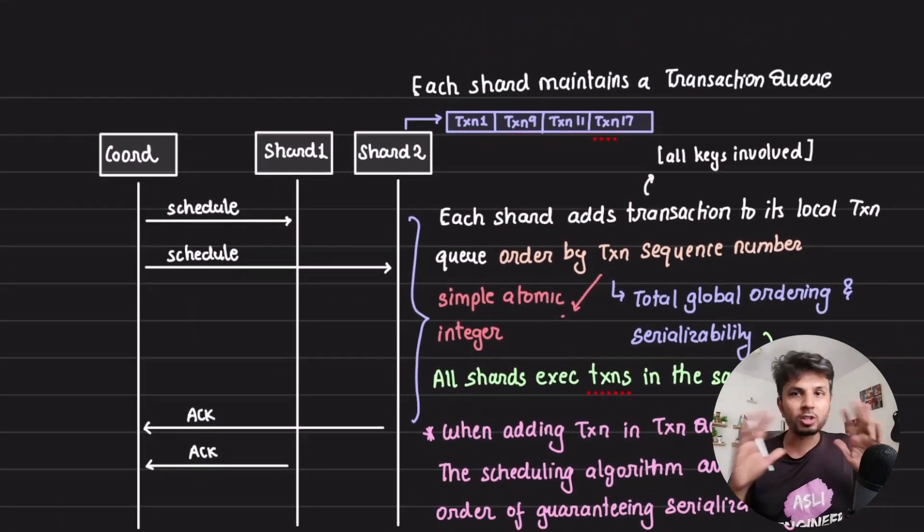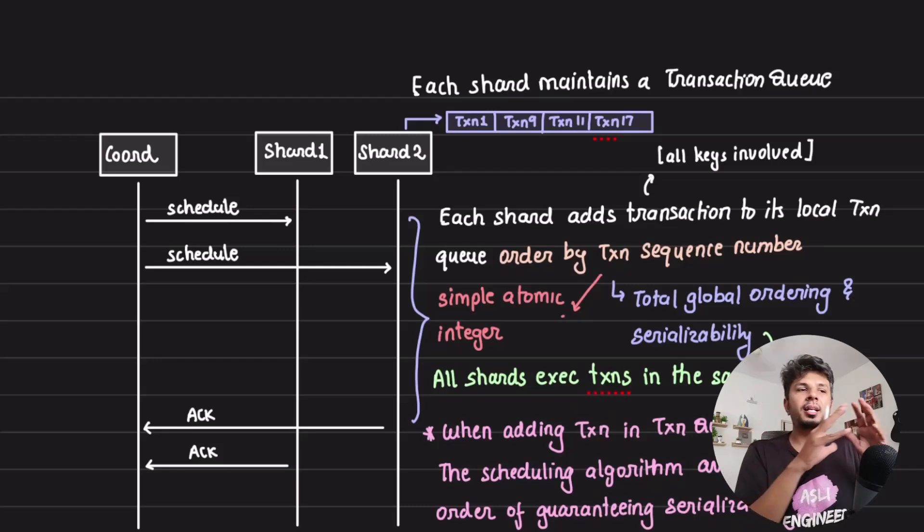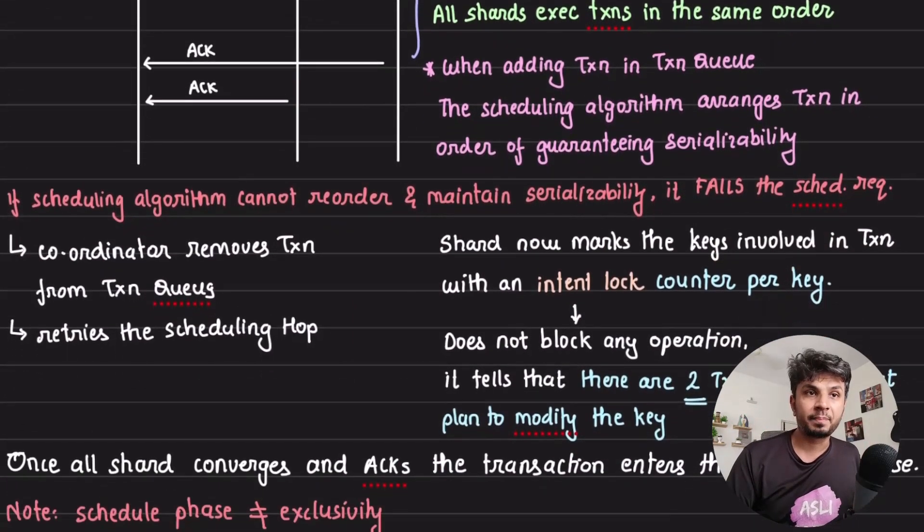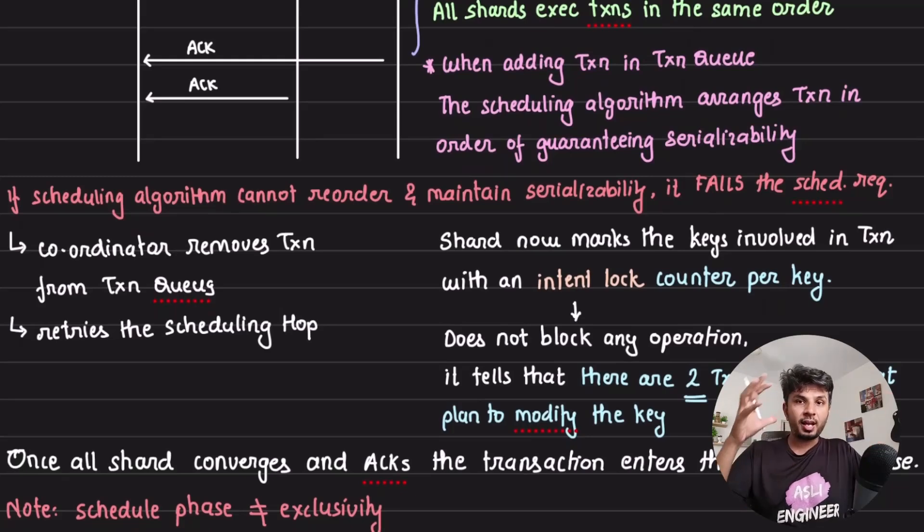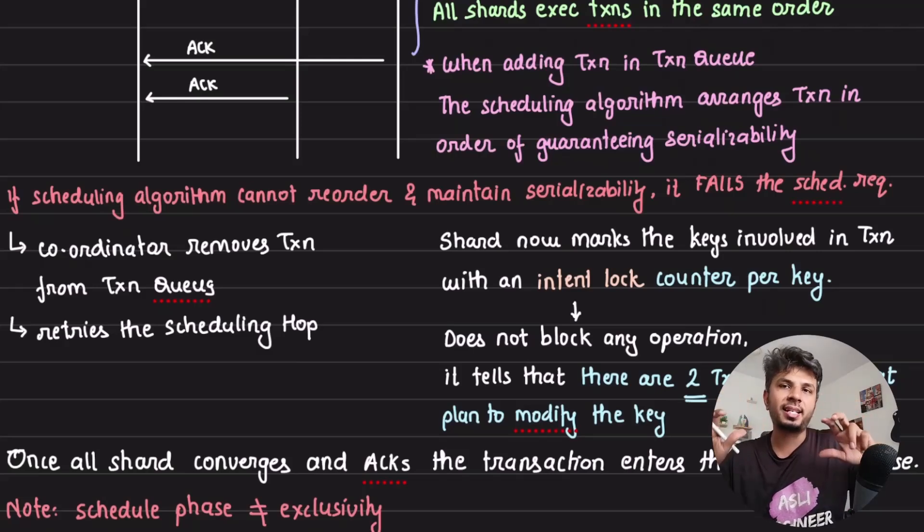It's completely possible that a particular transaction came first, then another transaction came, but the ordering would have changed because of your scheduling algorithm. This is where your scheduling algorithm kicks in. When a transaction comes to a shard and your scheduling algorithm cannot arrange it in a way that maintains serializability, it fails the transaction. The coordinator removes the transaction from the queue and it retries from the first step again.